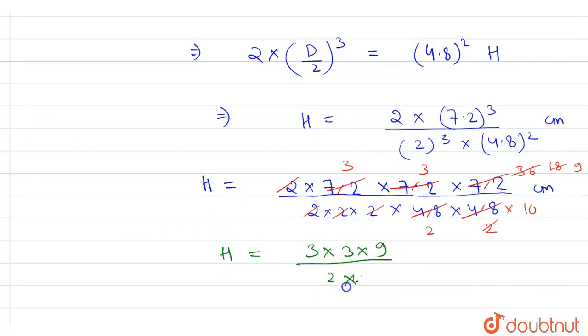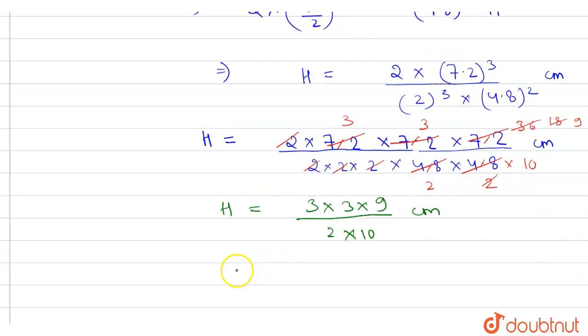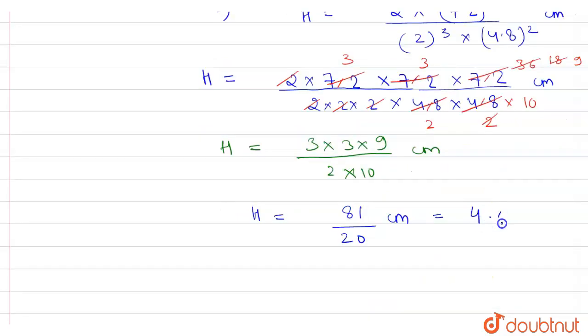So this will become h equal to 81/20 centimeter, this will be equal to 4.05 centimeter.